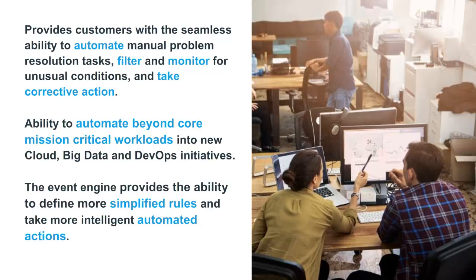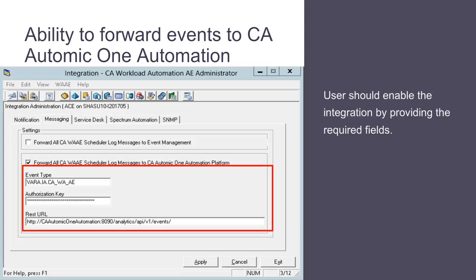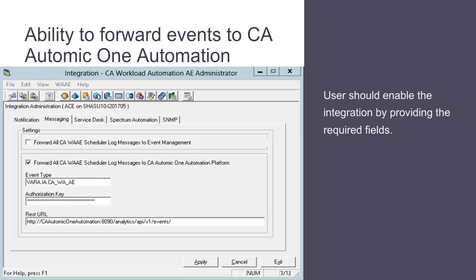Event actions using the new event engine can be triggered based on specific roles. To integrate CA Workload Automation AE with CA Atomic One Automation Platform, follow the steps outlined on DocOps. Enable the integration by providing the required fields. The CA Atomic One Automation event definition corresponds to CA Workload Automation AE messages. Specify the URL and authorization key for the CA Atomic One Automation Event Server to which the CA Workload Automation AE messages need to be published. Refer to CA Atomic Workload Automation documentation for details about Event Server and how to generate the authorization key.